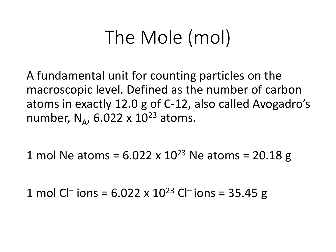We are starting today with the mole, which is a fundamental unit for counting particles on the macroscopic level. It's defined as the number of carbon atoms in exactly 12.0 grams of carbon-12, also called Avogadro's number, named after Amadeo Avogadro, and it is equal to 6.022 times 10 to the 23rd atoms — that is how many atoms there are in 12 grams of carbon-12. What's cool about this number is that it's also the number of atoms in the periodic table mass of any element.